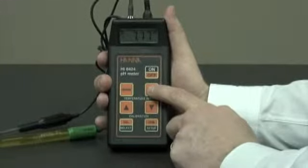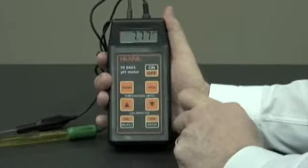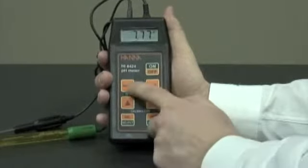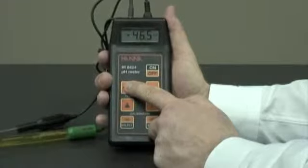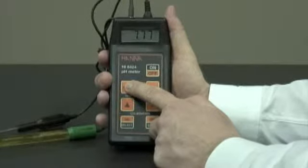We can use the hold button to hold the reading. We can use the range button to show temperature, millivolt, or back to pH.